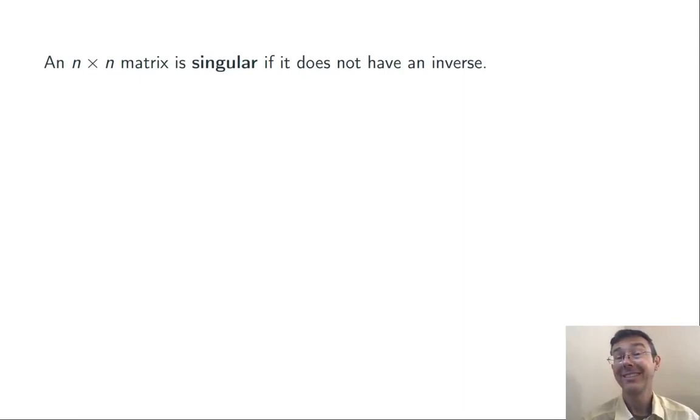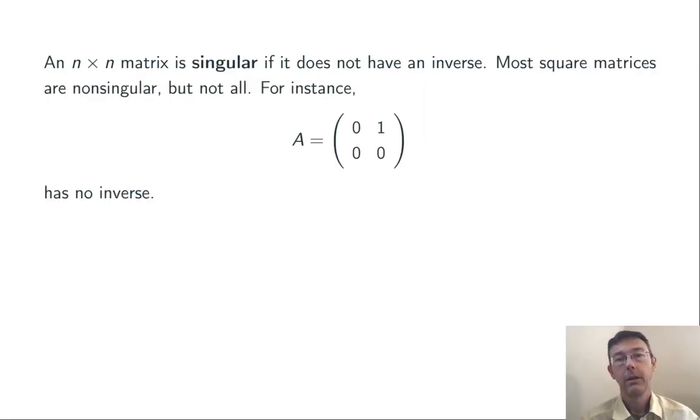A matrix that does not have an inverse is said to be singular or non-invertible. Most square matrices will happen to be non-singular, but there are lots of singular matrices. Here's a very simple one: the matrix with entries 0, 1, 0, 0.